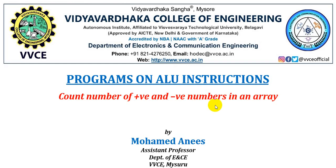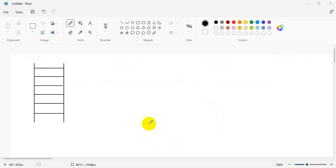In this video tutorial, we shall see the logic and the assembly code to count the number of positive and negative numbers in an array. Let us first see the logic of this program.